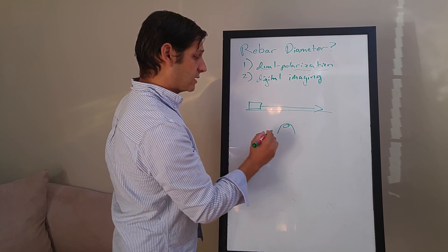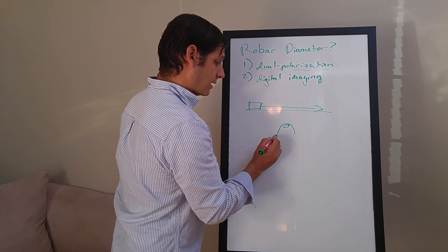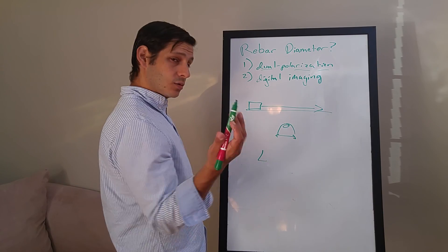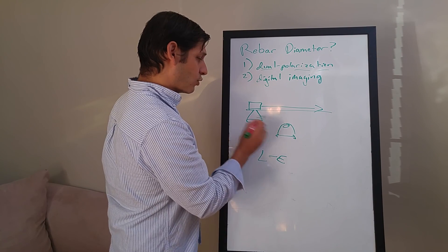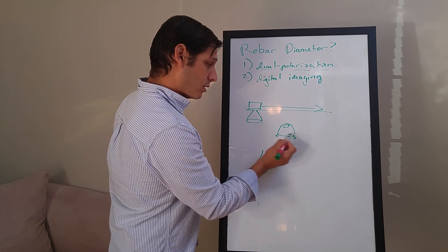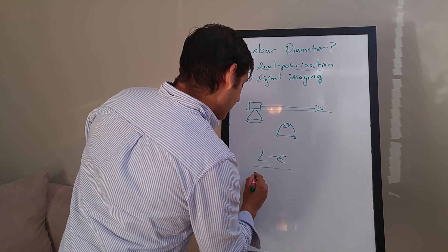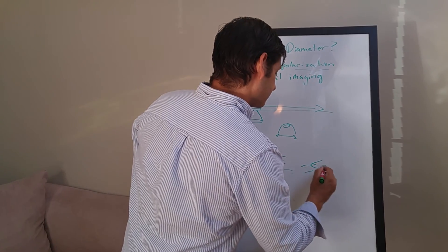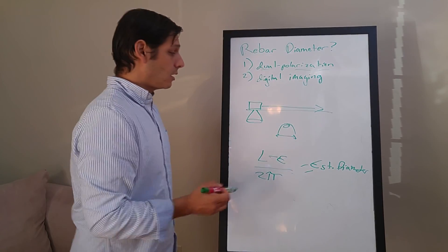What digital imaging shows is basically you take whatever the distance is of this hyperbolic reflection, which is L, minus whatever the footprint is of your radar signal when it's hitting the target, that's E. So you take the total length of the anomaly minus the footprint of the actual signal, divide that by two pi, and that equals your estimated diameter.